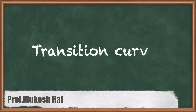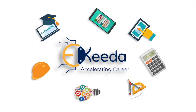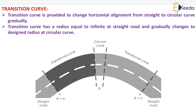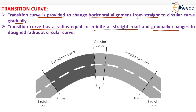Hello students, today we are going to study transition curves. A transition curve is provided to change horizontal alignment from straight to circular curve gradually. It has a radius equal to infinite at the straight road and gradually changes to the design radius at the circular curve.